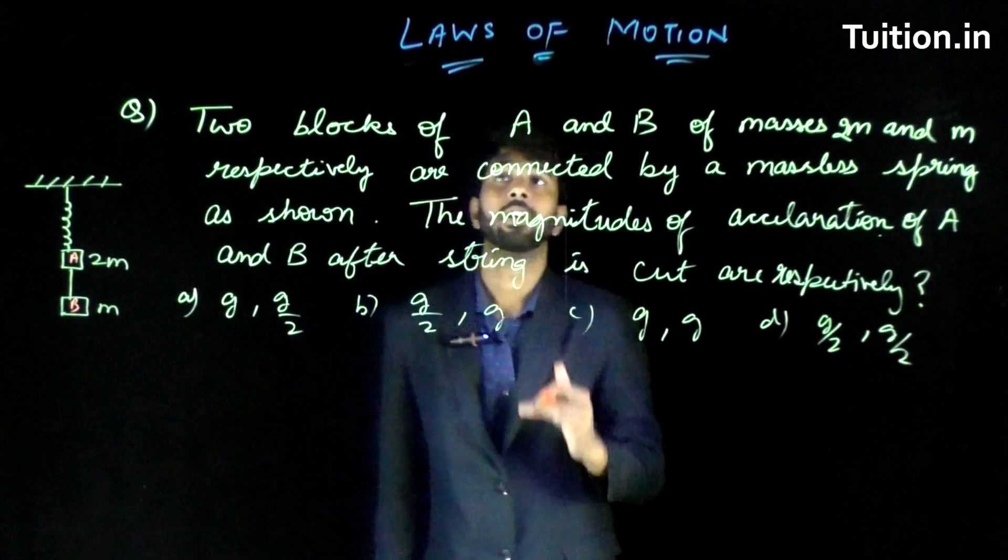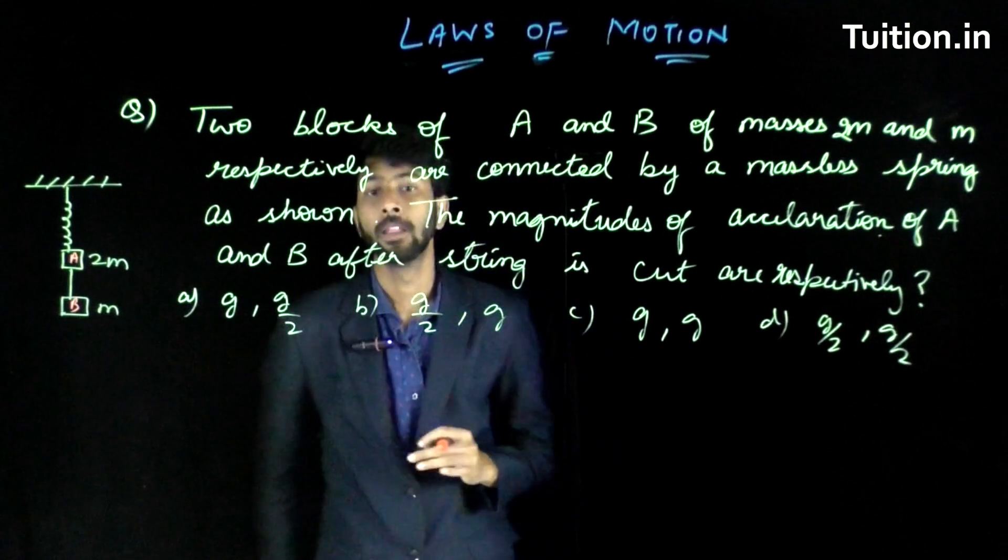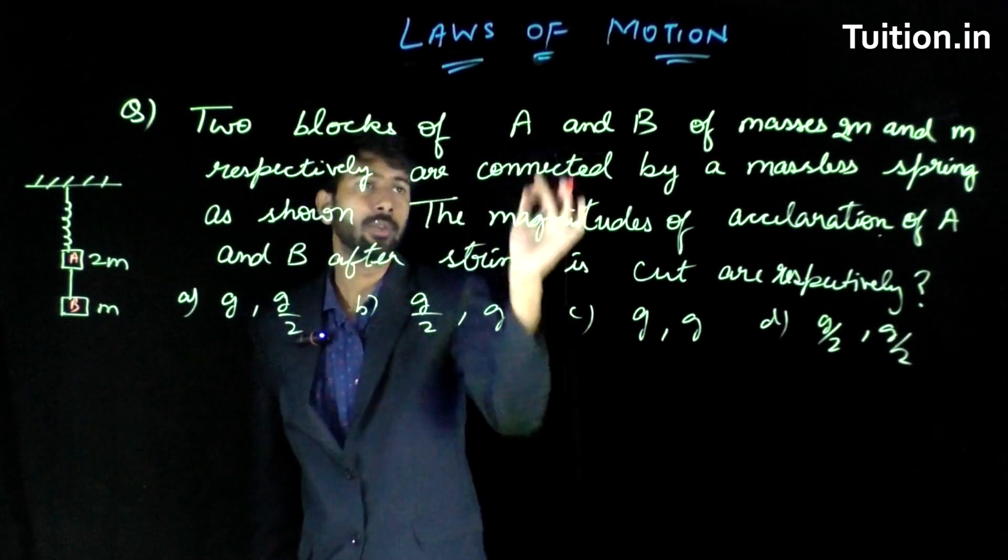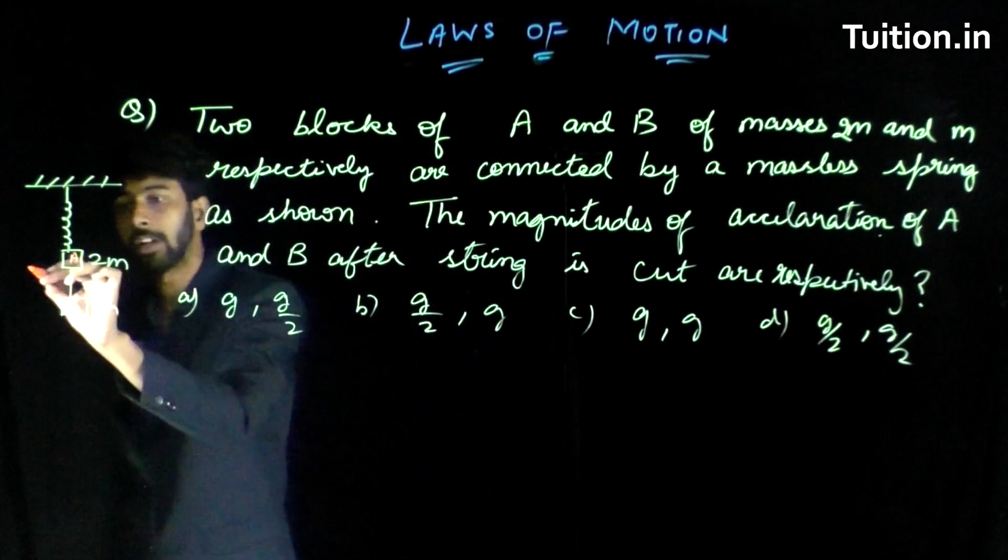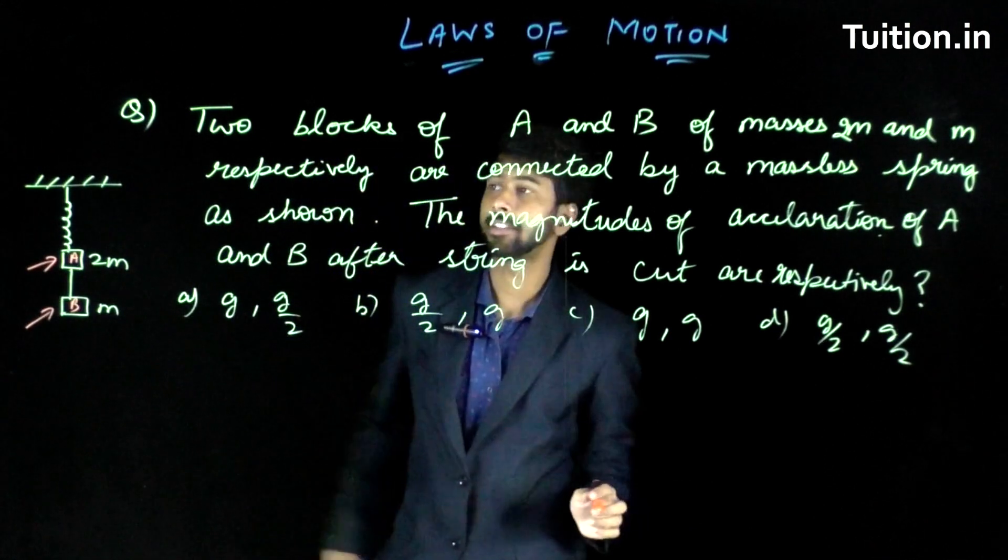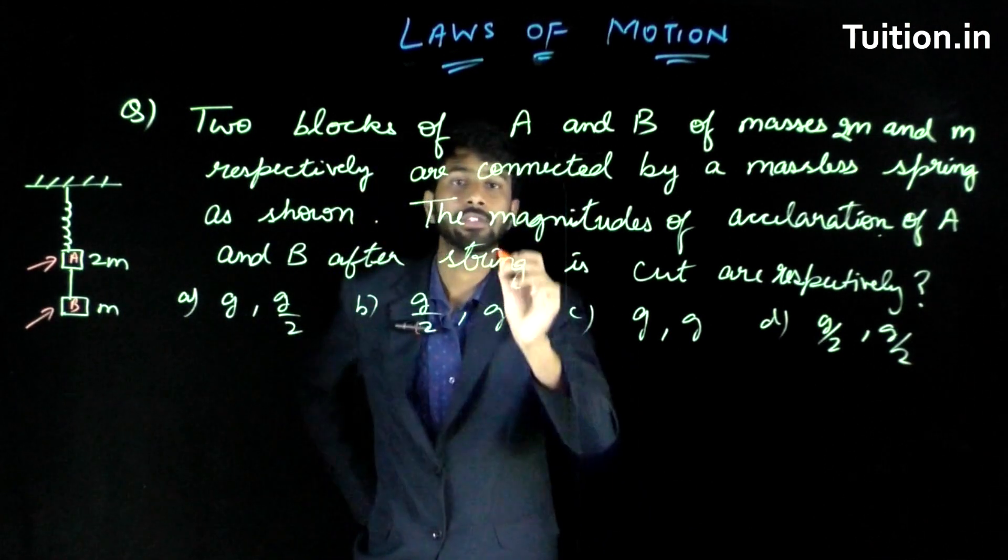So, let us look at another previous problem from the topic laws of motion. This problem has two blocks A and B. This is your block A, block B. A has a mass of 2m and B has a mass m.